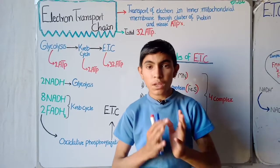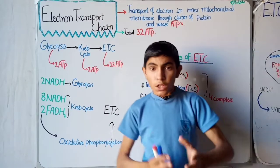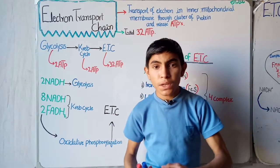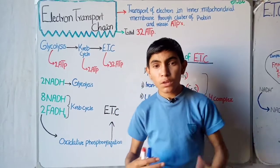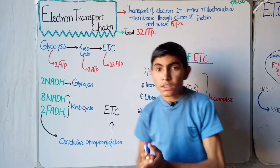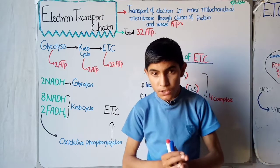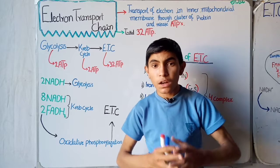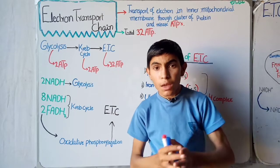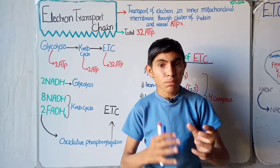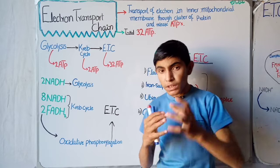Welcome back to Ramzan Biology. Today our topic is the electron transport chain. We have been talking about cellular respiration — in the previous lecture we covered aerobic respiration steps: glycolysis and the Krebs cycle. This is the third step of aerobic respiration inside eukaryotic cells. Please watch my previous lectures on glycolysis and the Krebs cycle first, because these are the stepwise stages of aerobic respiration.